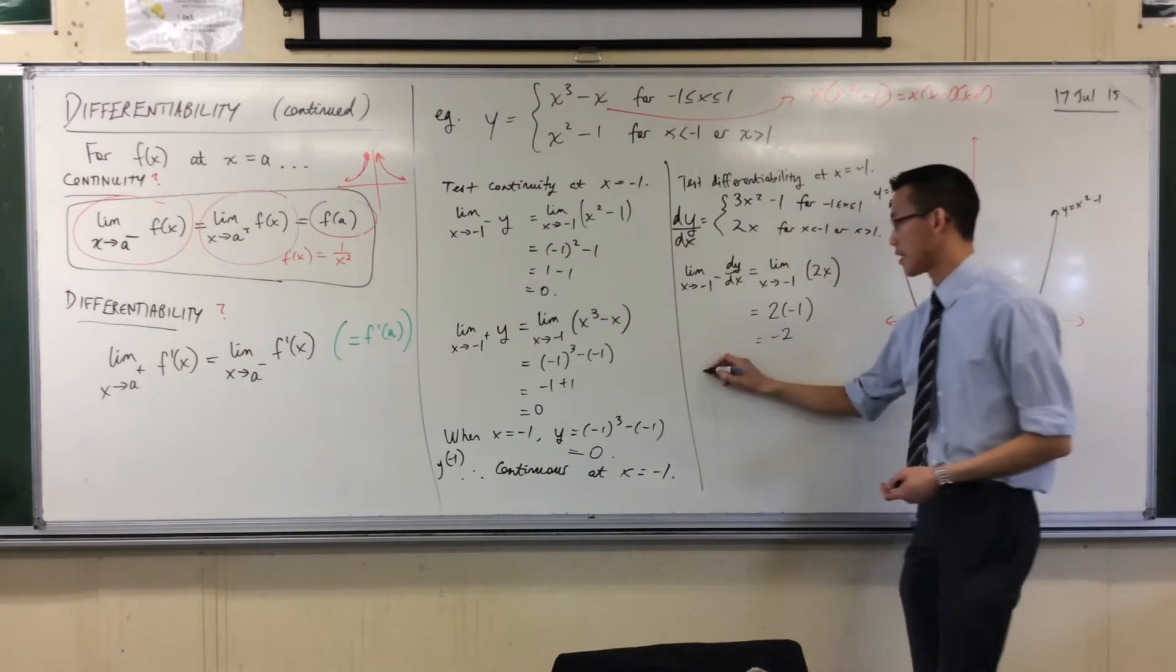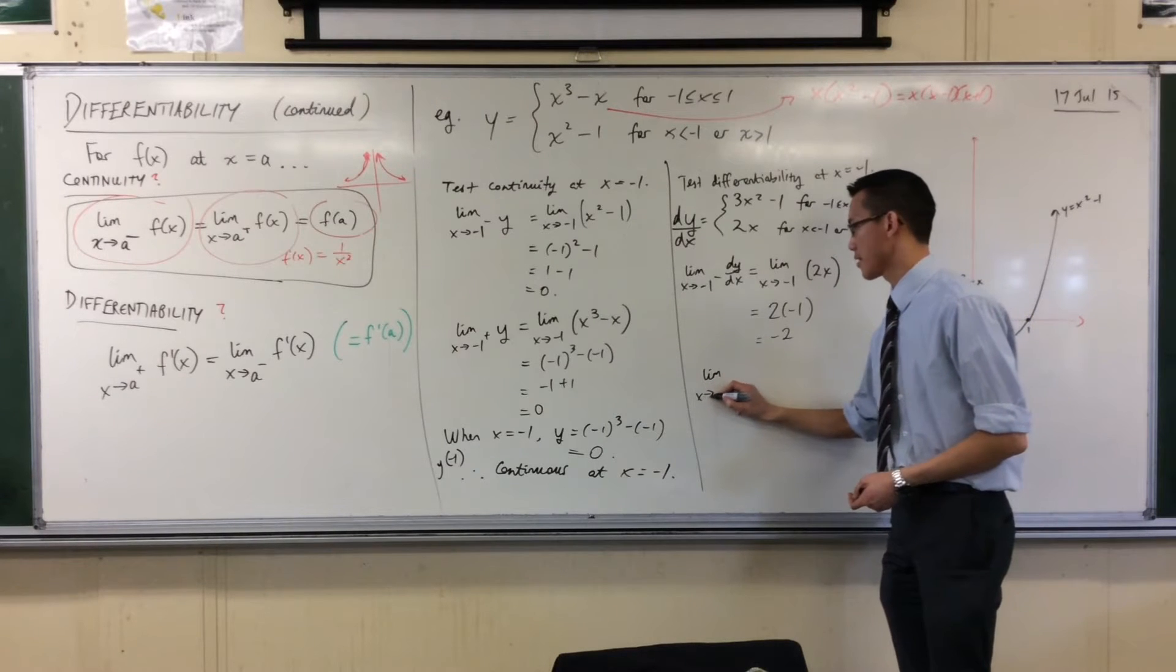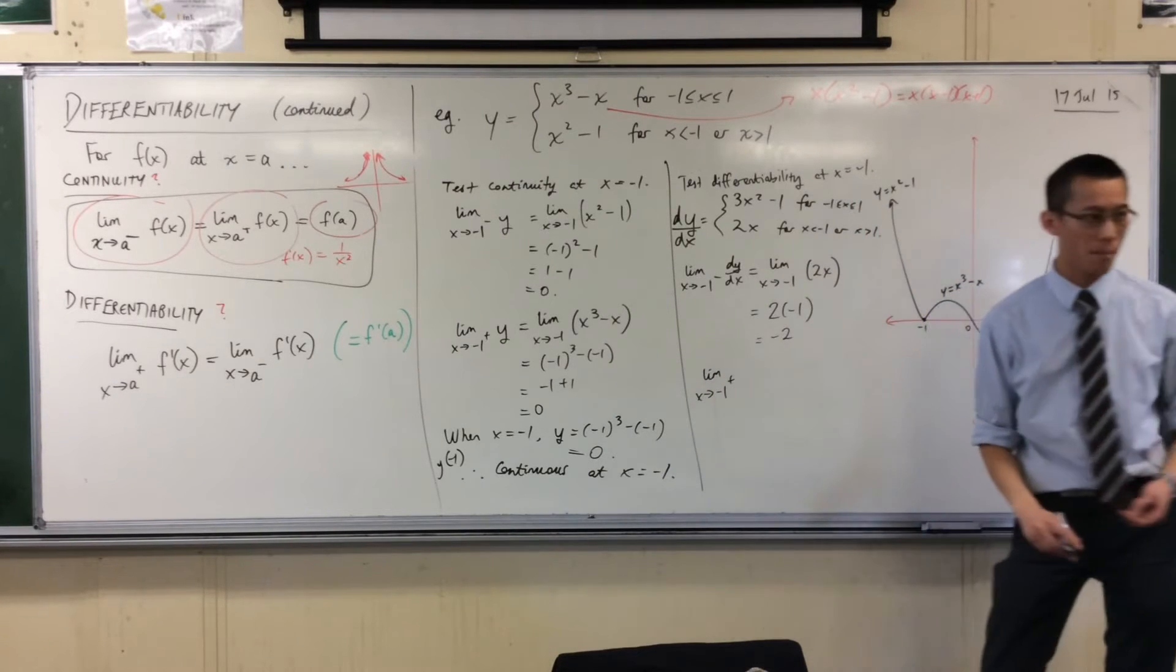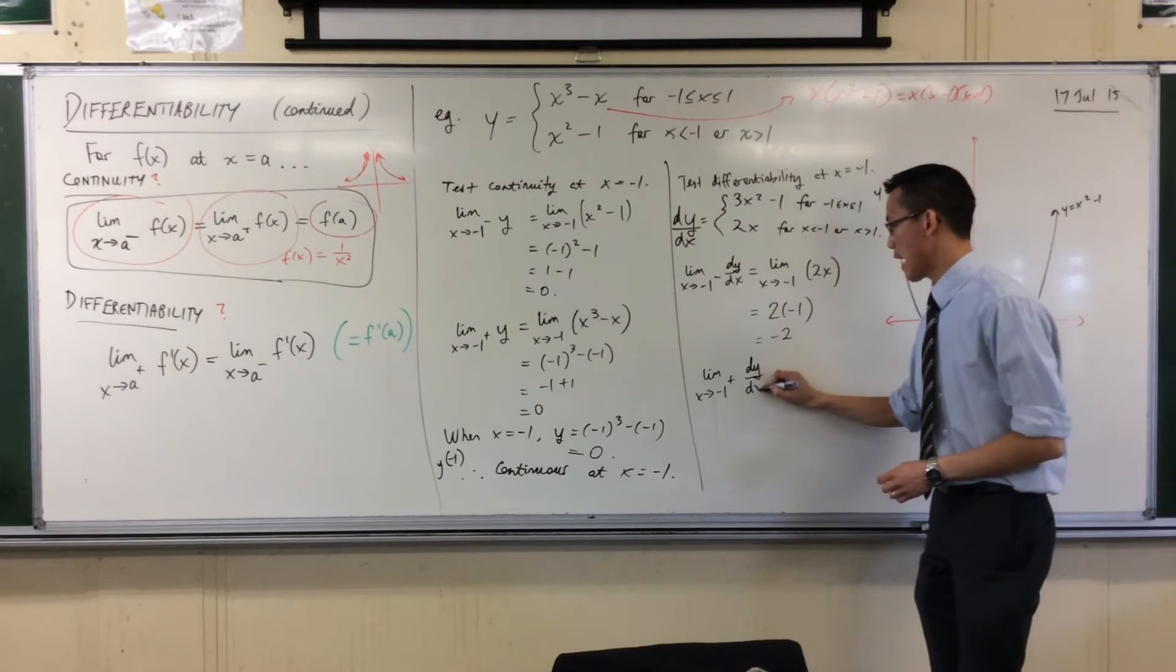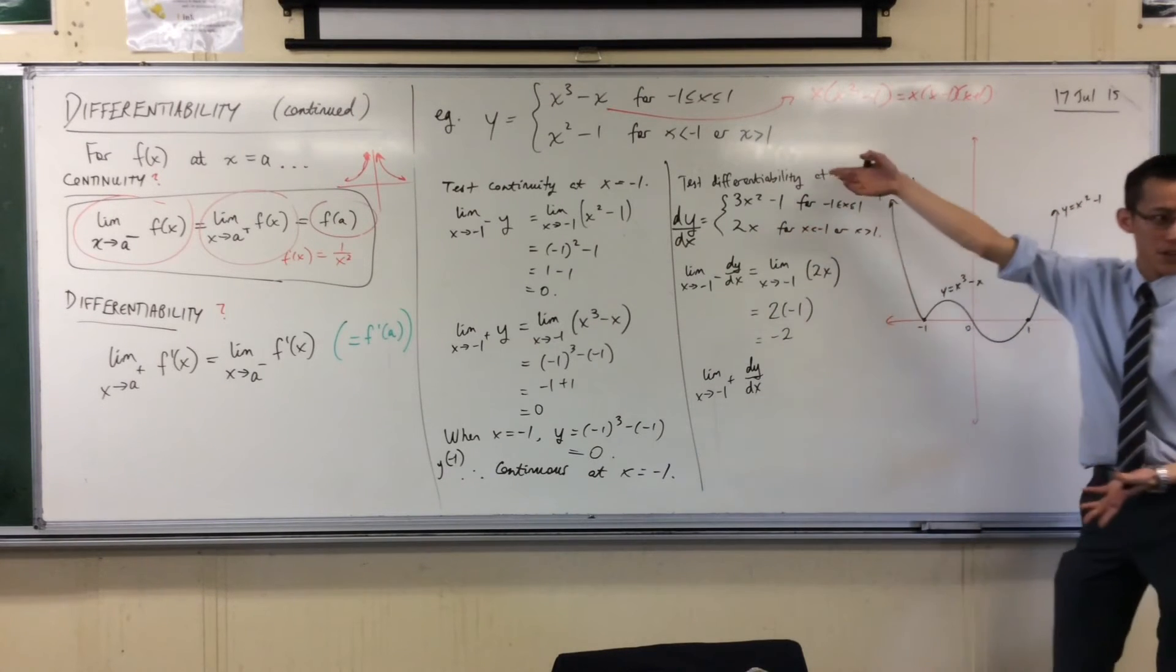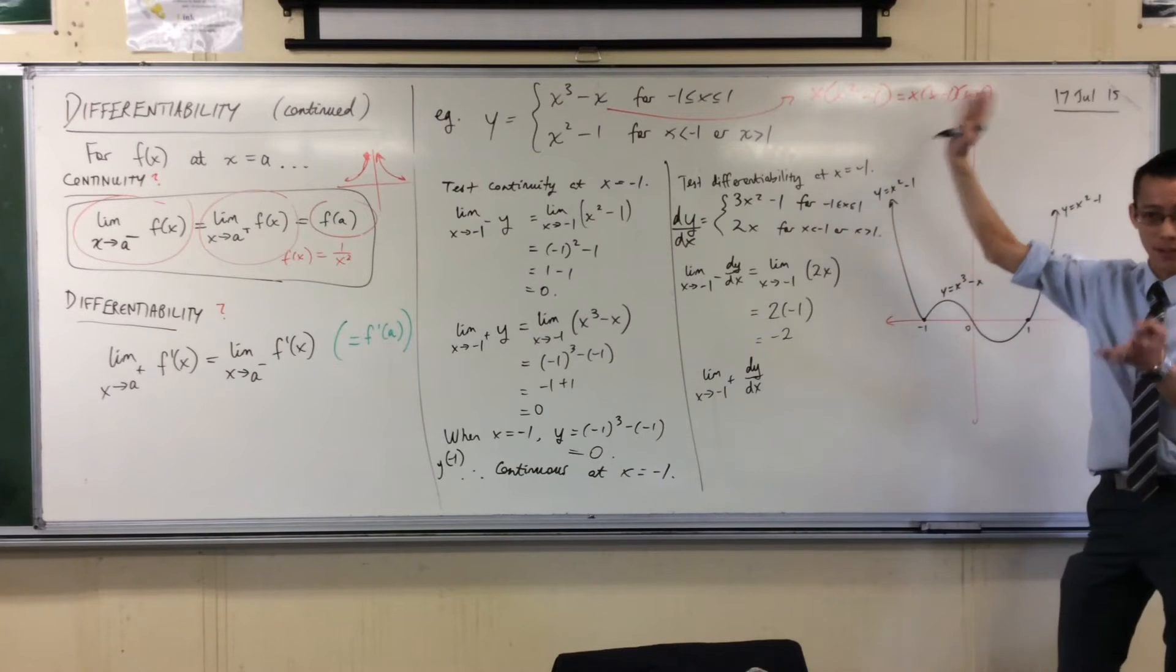Now I evaluate it from the other side. Limit. So x approaches negative 1 from the right, from above of the derivative. And then I carefully look, and obviously it's the other part of the piecemeal function that I'm interested in.